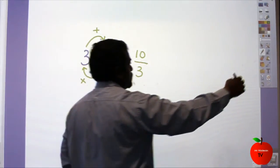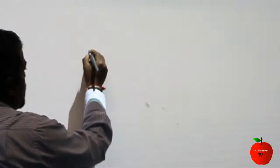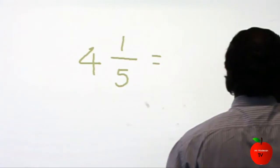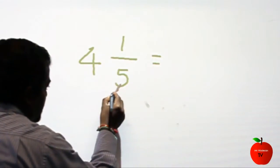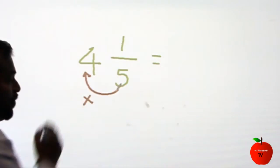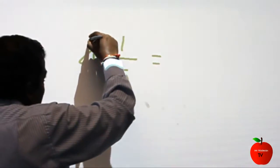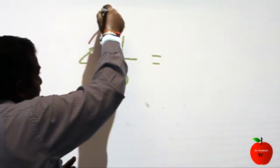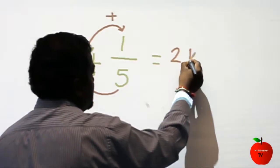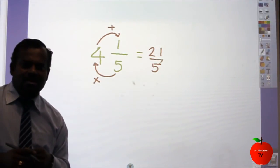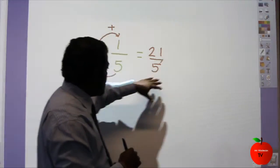Now let's see one more example: 4 and 1 over 5. First you have to multiply these two numbers — 5 times 4 is 20. Then add 1 on top: 5 times 4 is 20, plus 1 comes to 21. So the answer is 21 over 5. That is the improper fraction.